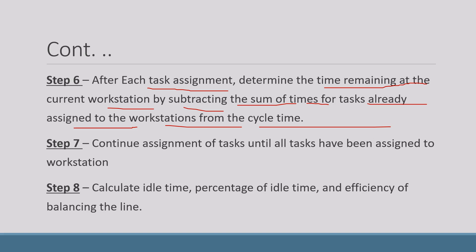Step 7 is to continue the assignment of tasks until all tasks have been assigned to workstations. If one workstation is taking more time to complete its work, assign other tasks to other workstations so they will not be idle. This continues until there is no idle time — if one workstation works very fast while the previous one takes more time, you assign some additional tasks to the second workstation to eliminate idle time.